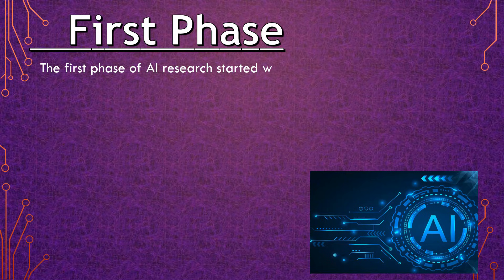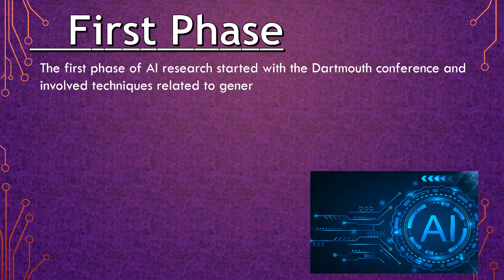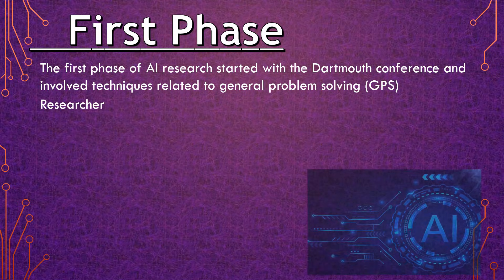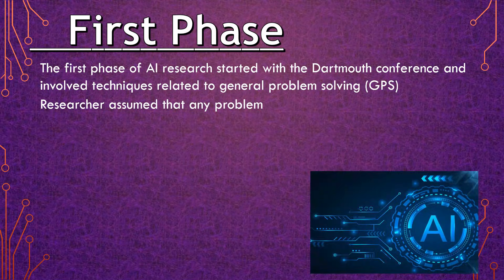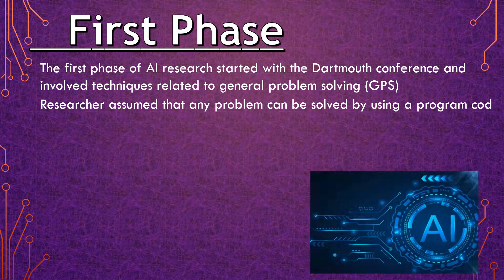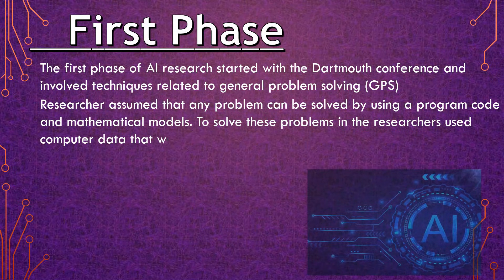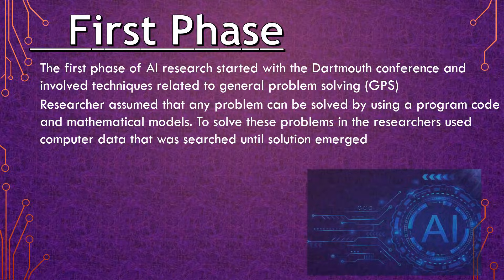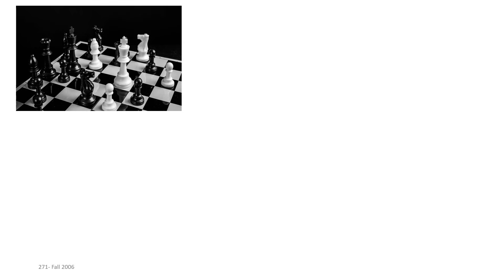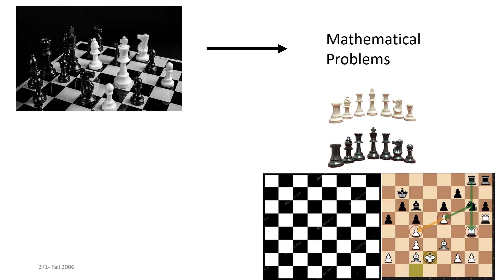The first phase of AI research started with the Dartmouth Conference and involved techniques related to General Problem-Solving, or GPS. Researchers assumed that any problem can be solved using a program code and mathematical models. To solve these problems, researchers used computer data that was searched until a solution emerged. For example, to solve chess, the whole problem was converted into a mathematical problem in which the board, pieces, moves, etc., were all converted into symbols.